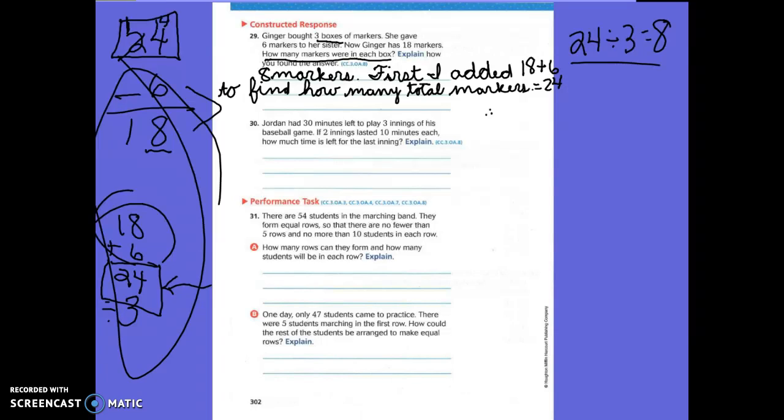We're going to write equals 24 total markers. Because we want to make sure we have that. Then what did we do with that total markers? We divided by 3. Then, divide 24 divided by 3 equals what? 8. To find how many are in each box. Find how many markers are in each box. Because my word, each, means divide.